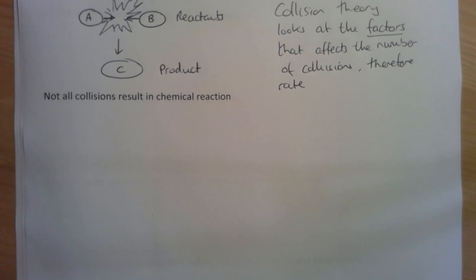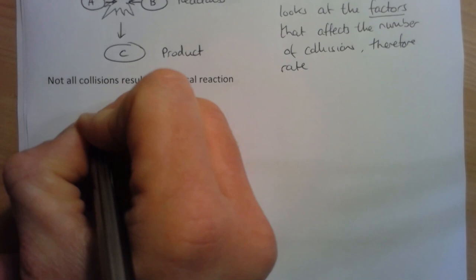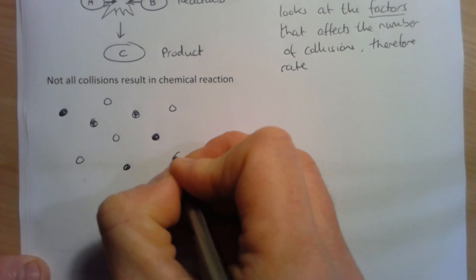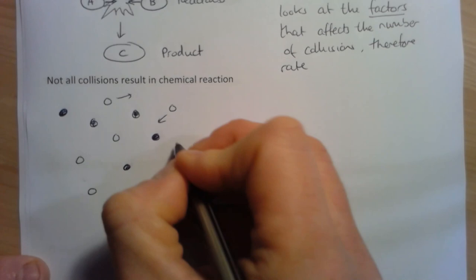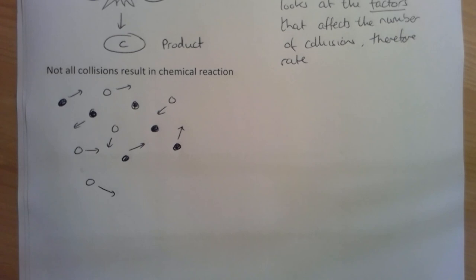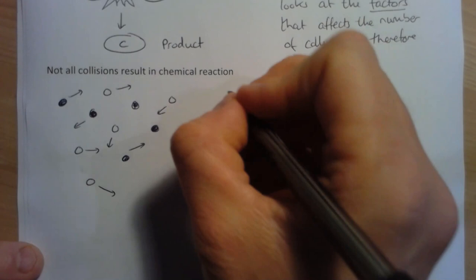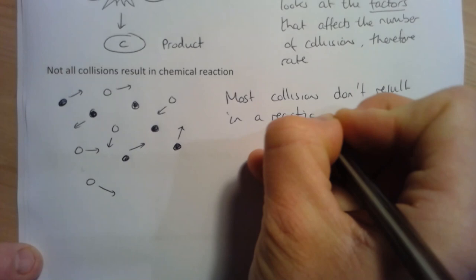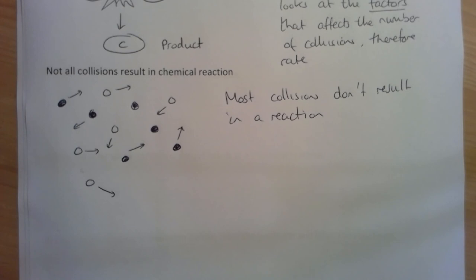A really important idea here is that not all collisions result in chemical reactions. Thinking about our model with lots of particles — two different reactant particles moving about randomly, especially in the gas state — there's a chance they could collide with each other, but in fact most collisions don't result in a reaction. The reason is that they've actually got to collide with a lot of energy in order for a chemical reaction to take place.